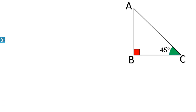We know that the sum of interior angles of a triangle is 180 degrees. If angle C is 45 degrees, then angle A is also equal to 45 degrees. That means in triangle ABC, two angles are equal.